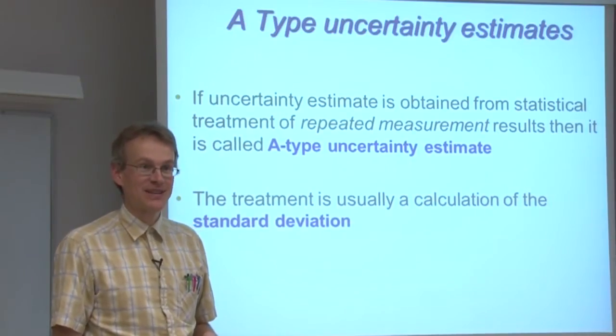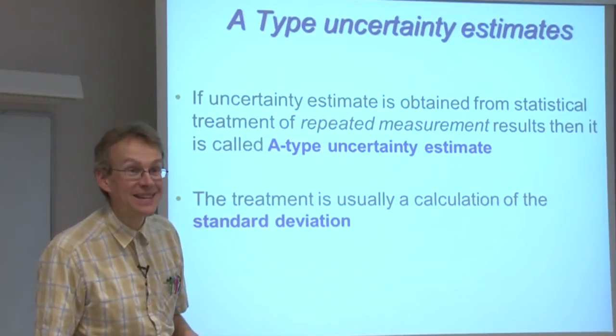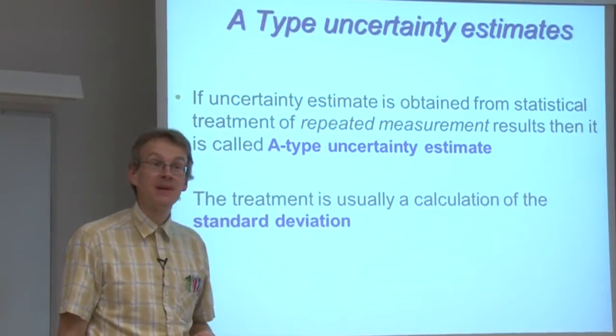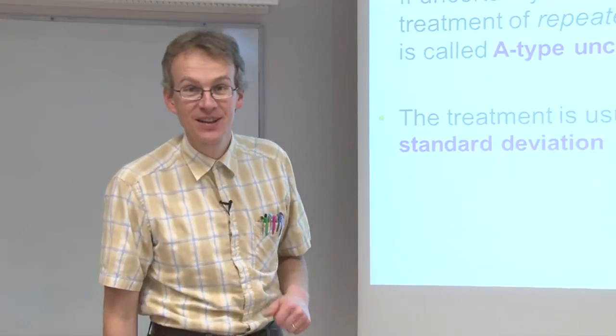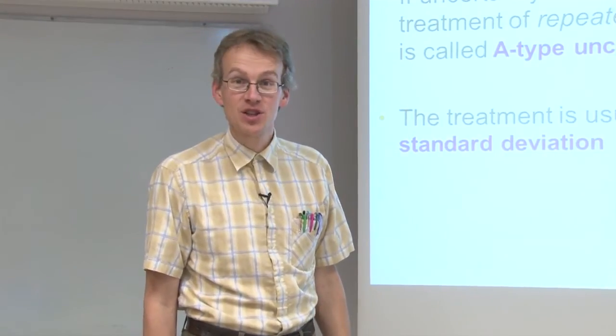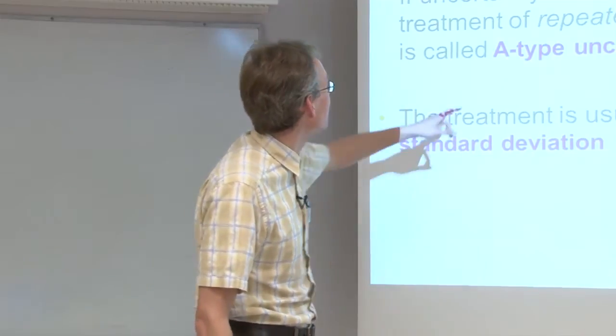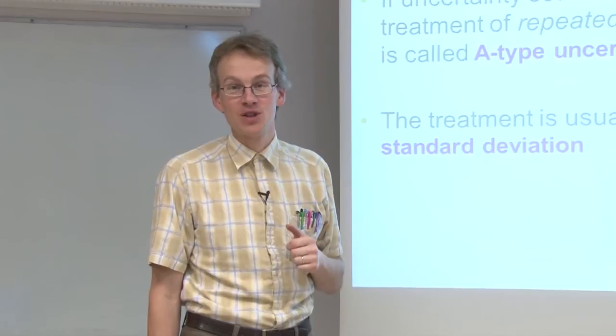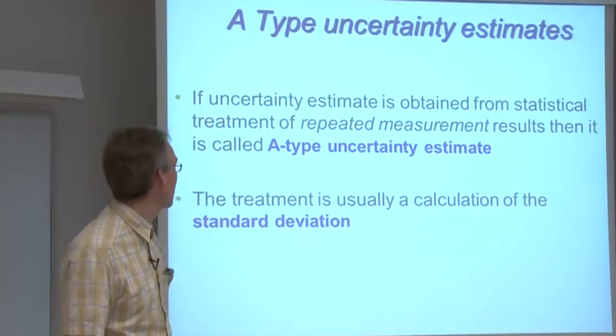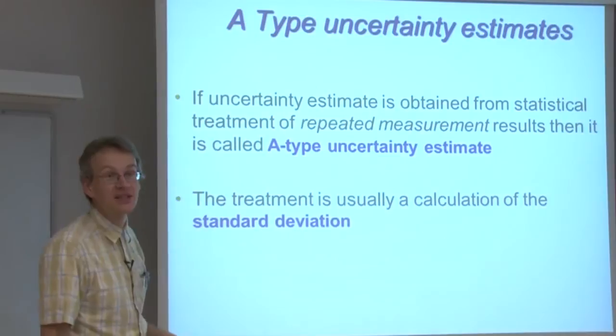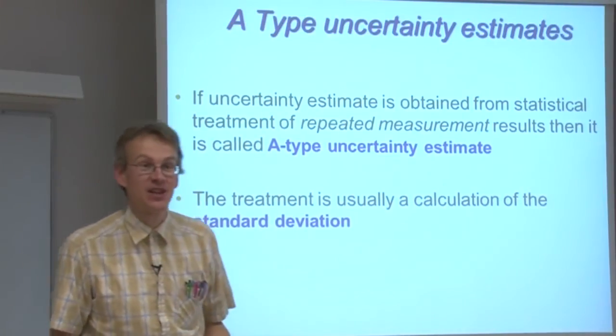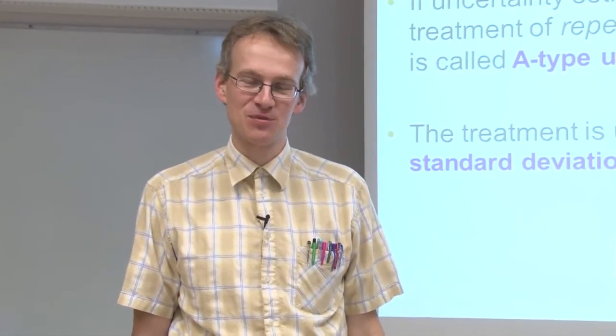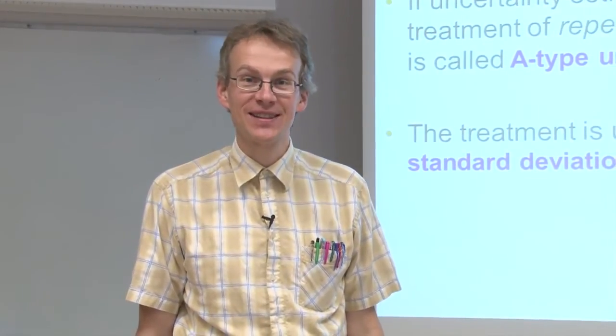A-type uncertainty estimates are obtained from repeated measurement results. So whenever we repeat measurement several times and then make our calculations, we do A-type uncertainty estimation. Usually the data treatment means calculating the standard deviation. So the most common A-type measurement uncertainty is a standard deviation.